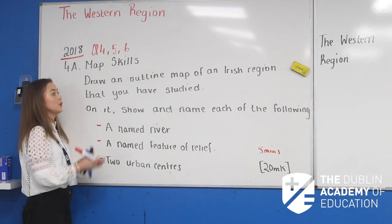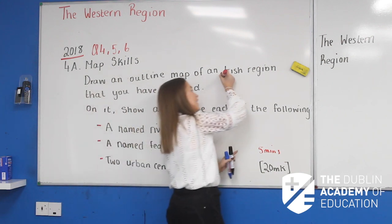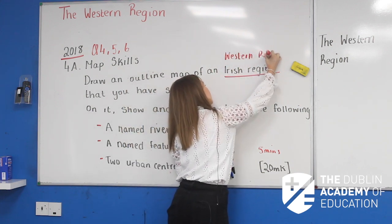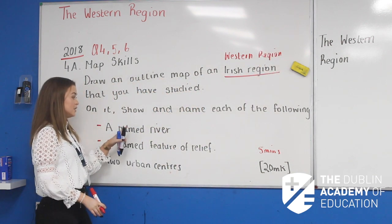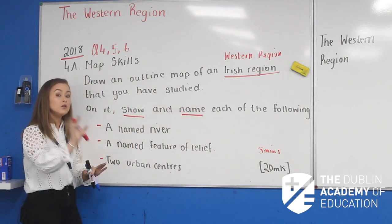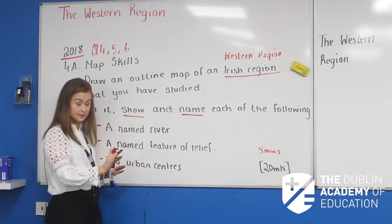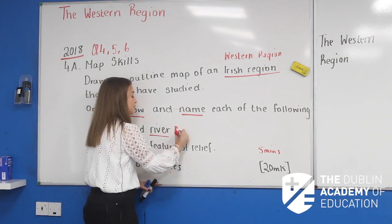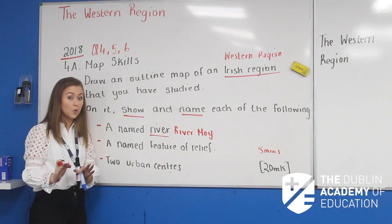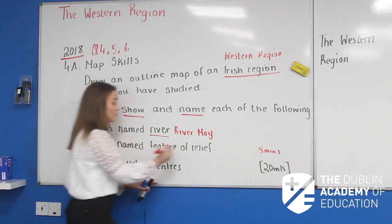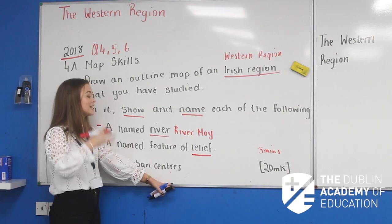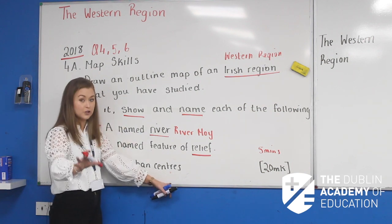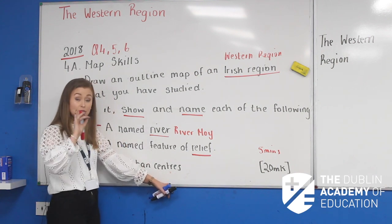Now let's have a look at this question. We're asked to draw an outline map of an Irish region — write down 'western region' above it. On it, show and name each of the following. You'll always be asked to show and name four things. In this case we're asked for: first, a named river — the river we're going to show is the River Moy, in County Mayo. Second, a named feature of relief. Remember, relief is our mountainous areas — they could also say a feature of drainage, so just note that down.